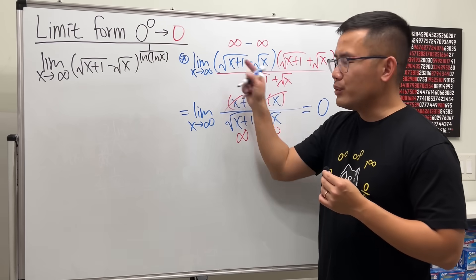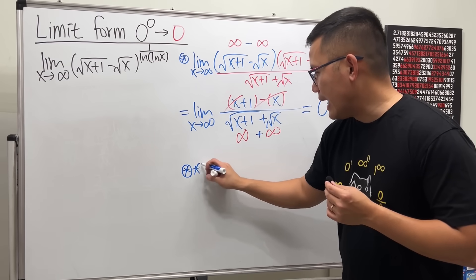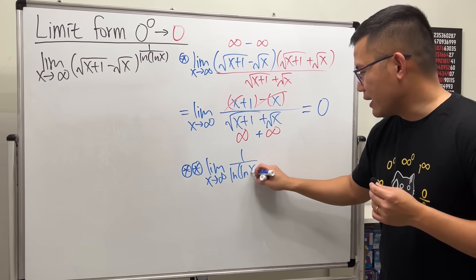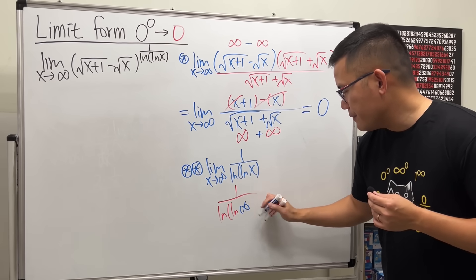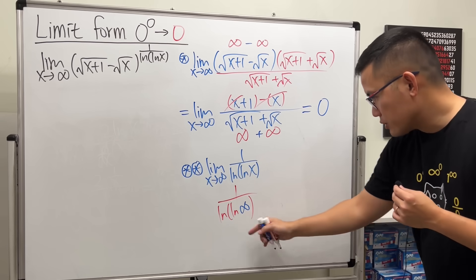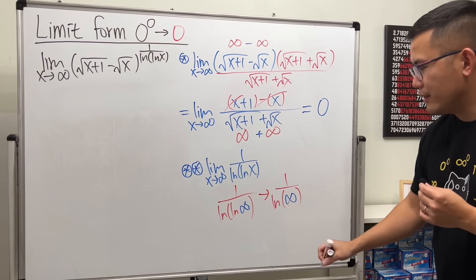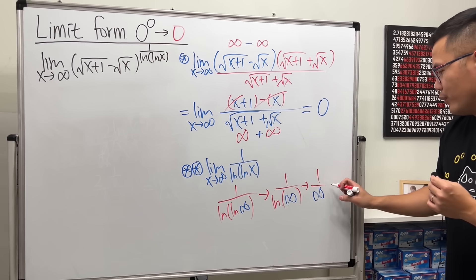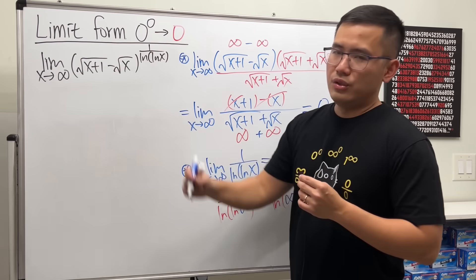But if you have a 2 instead, it's a different story — go ahead and try it. For the exponent, if we have the limit as x approaching infinity of 1 over ln of ln of x, well, put infinity in there: we get 1 over ln of ln of infinity. So we get 1 over ln of infinity, which is infinity, and ln of infinity is infinity. So it's 1 over infinity, which gives us 0. So this condition is satisfied.